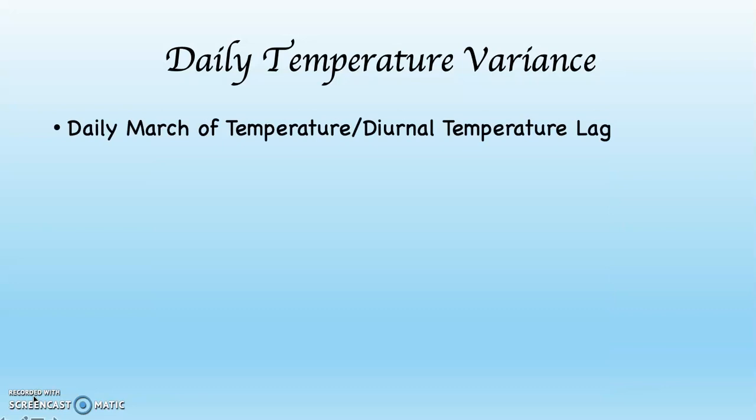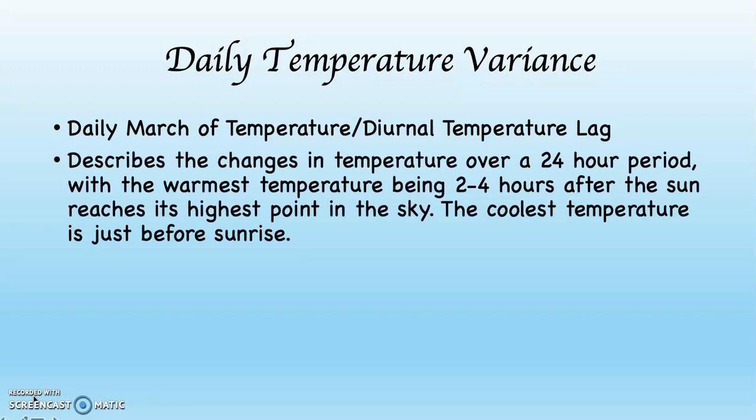This is called the daily march of temperature or the diurnal temperature lag. Diurnal is just a swanky word for daily. It describes the changes in temperature over a 24-hour period, with the warmest temperature being 2 to 4 hours after the Sun reaches its highest point in the sky, and the coolest temperature is just before sunrise. That warmest temperature is because of a surplus of energy in the atmosphere. More shortwave energy is coming in than longwave going out. The result is temperatures are able to go up. Once you get past that point, whether it's 2 o'clock, 3 o'clock, 4 o'clock, 5 o'clock, we begin to run a deficit. There's more longwave energy going out than shortwave energy coming in, and temperatures begin to go down.